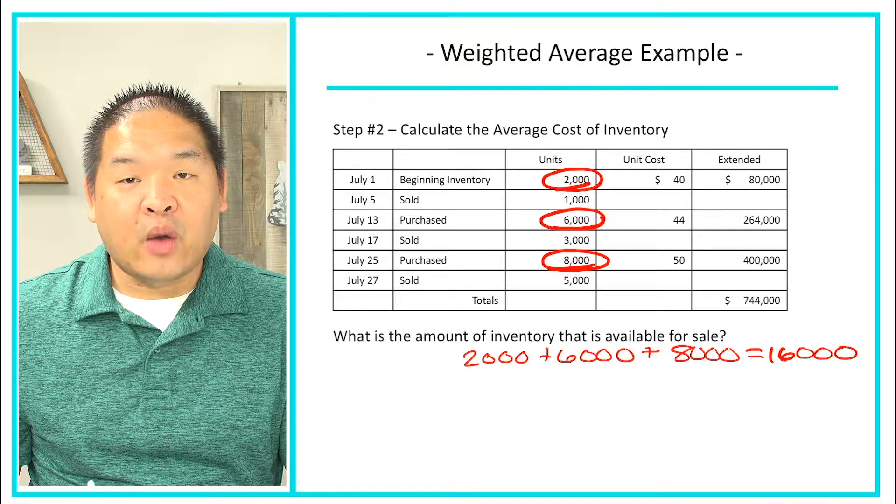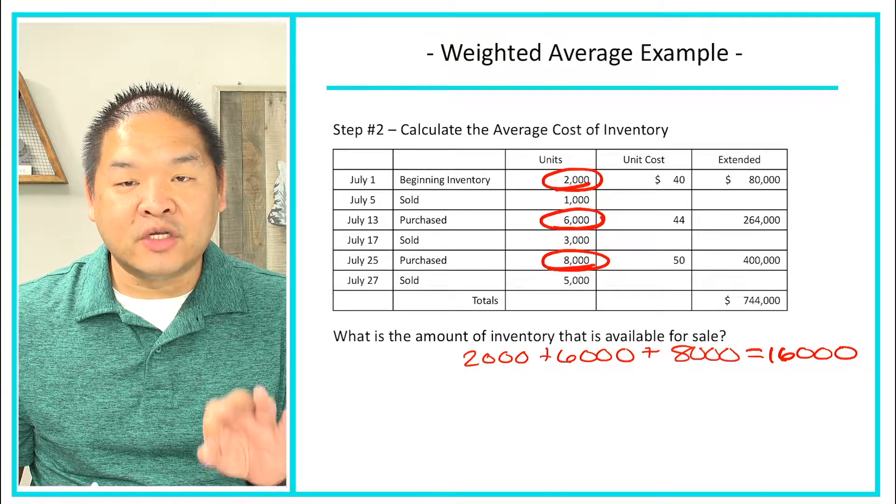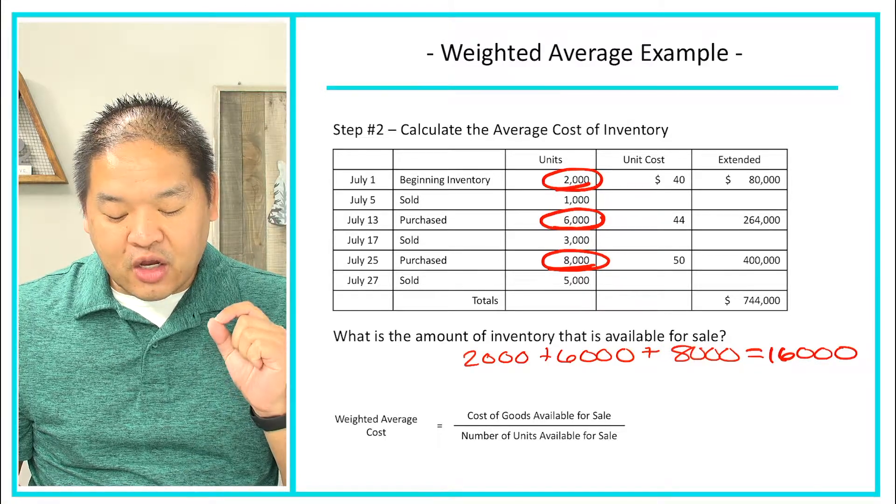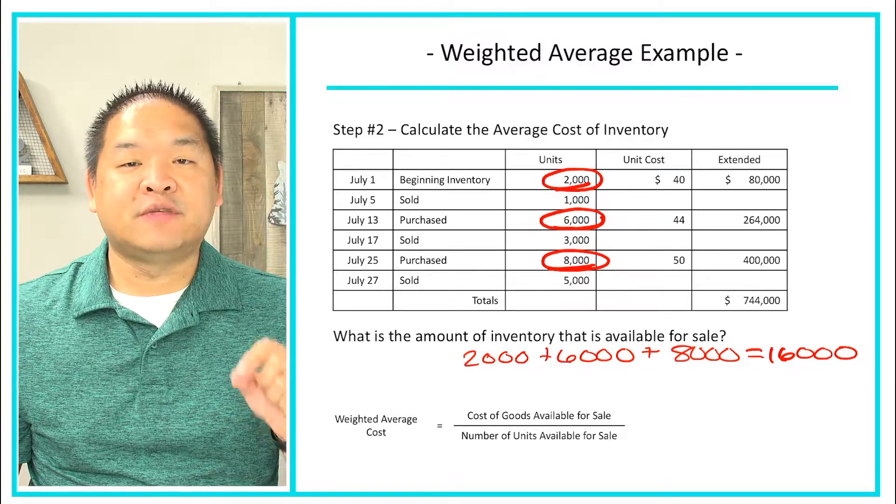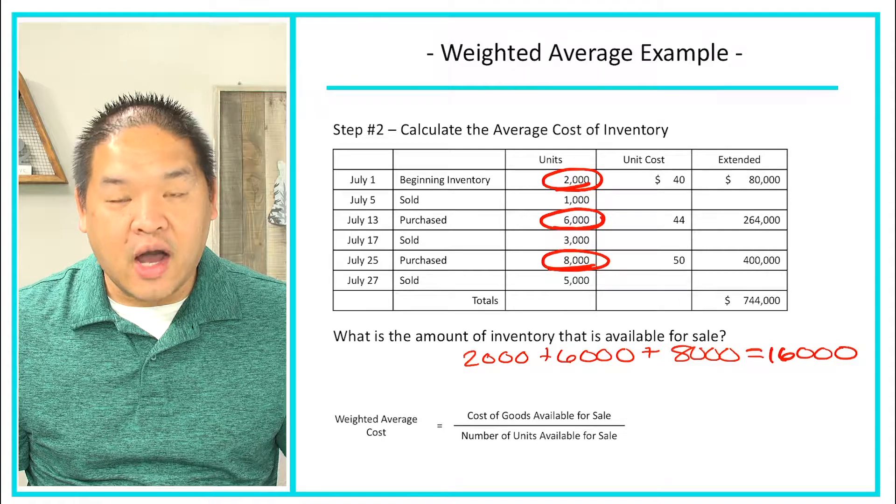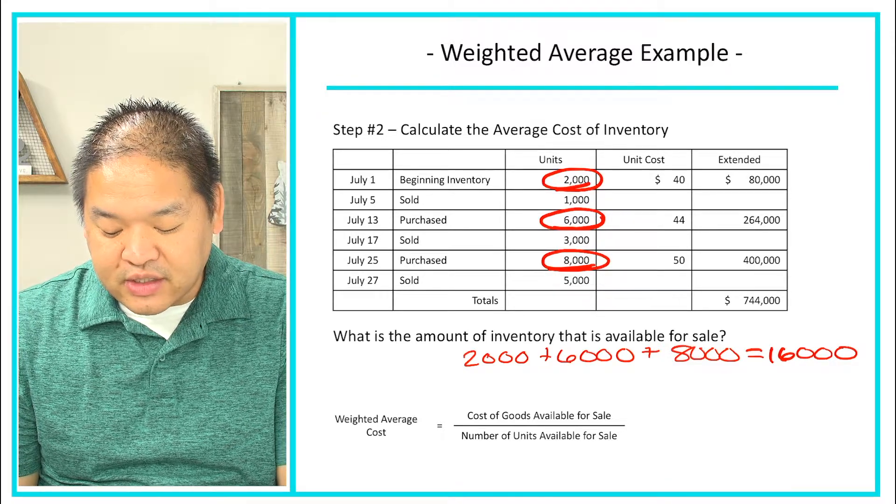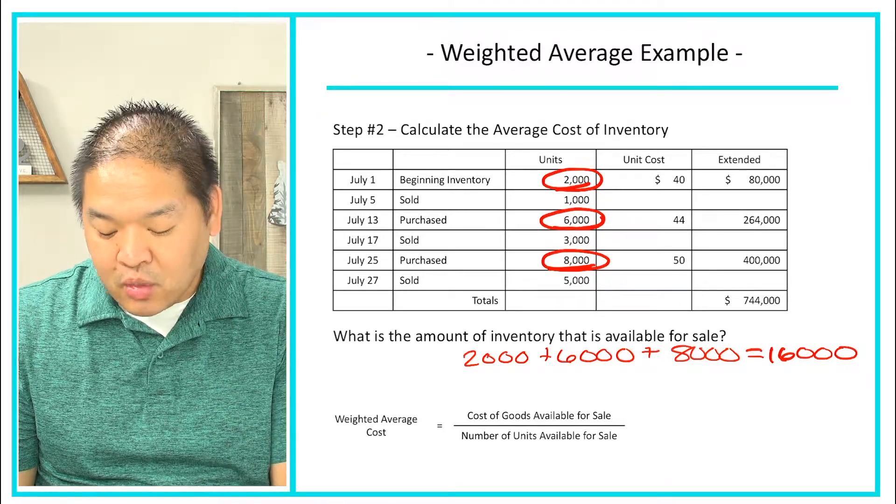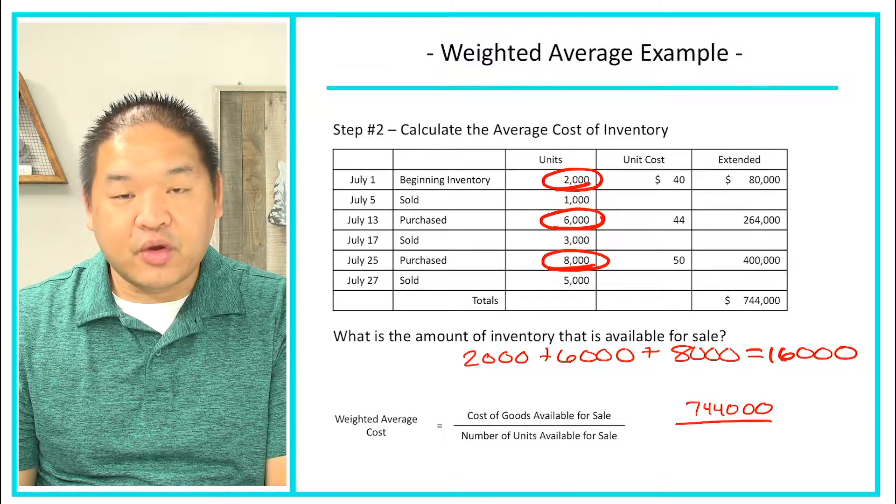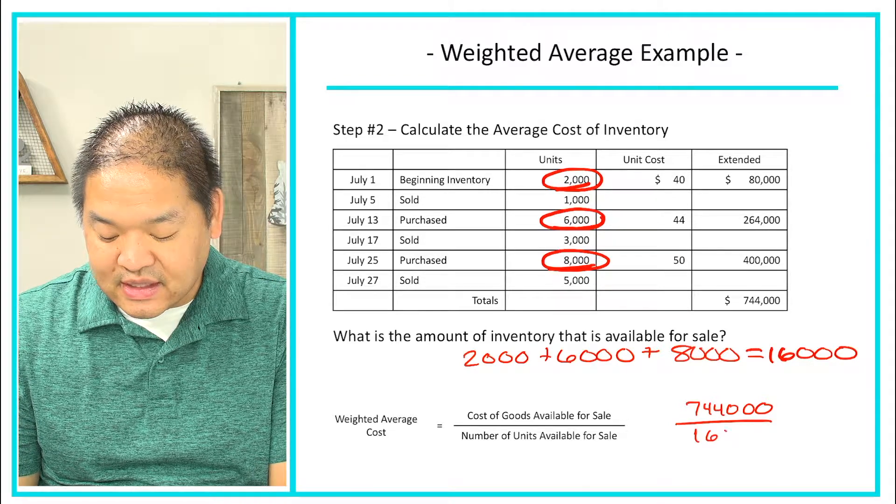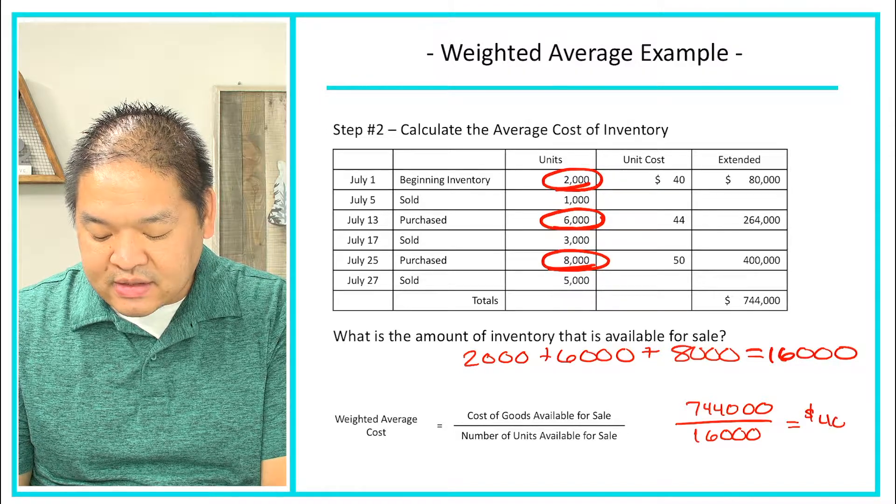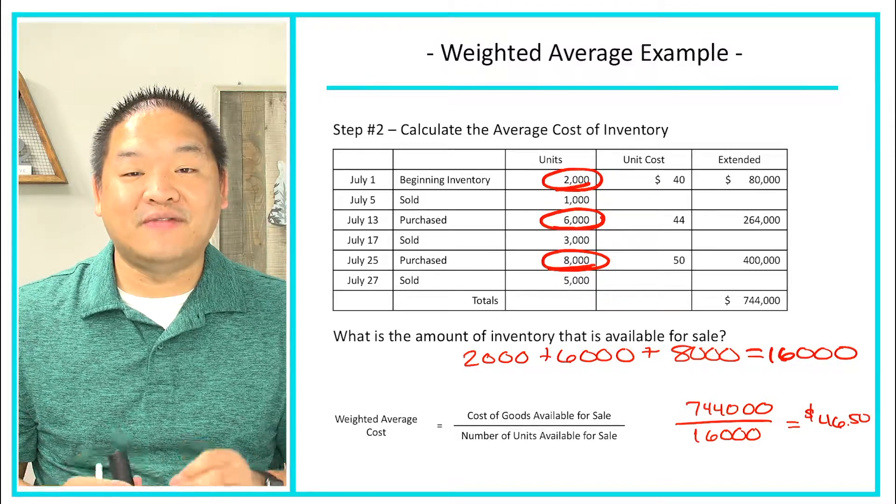So once we have that, now we can calculate our weighted average cost. To do that we're going to use our equation that we learned in the last lesson. We're going to take our cost of goods available for sale divided by the number of units available for sale, and that's going to give us our weighted average cost. So our cost of goods available for sale we calculated in step number one, which is $744,000, and we're going to divide that by the number of units available for sale, in this case 16,000 units. When we do that calculation we get $46.50.